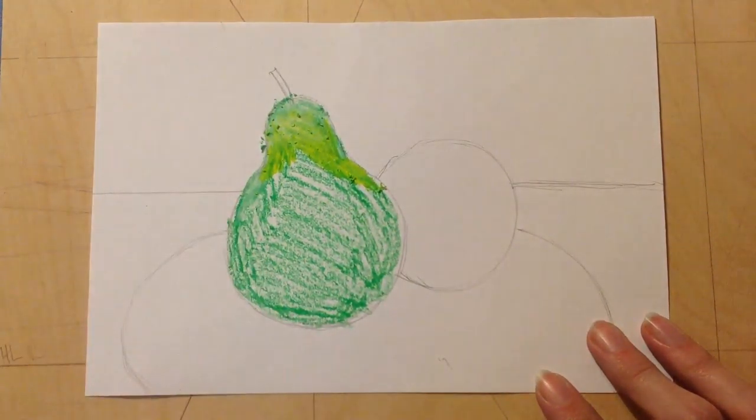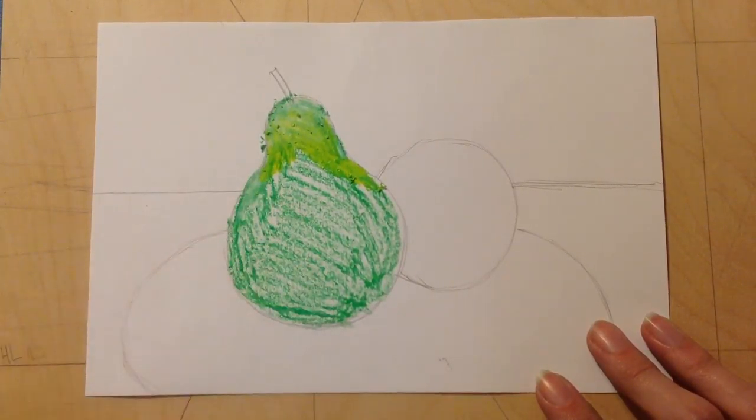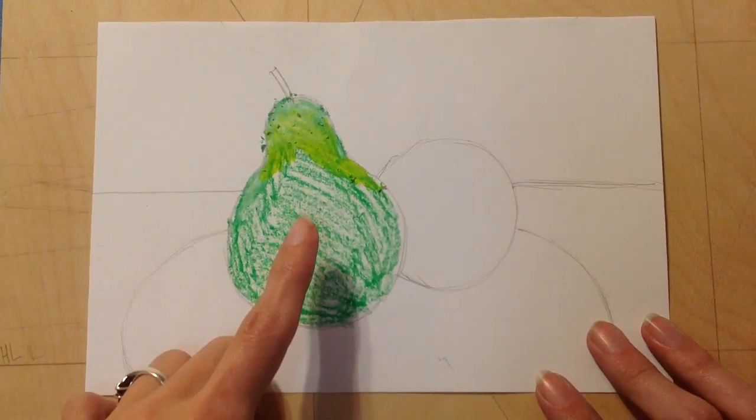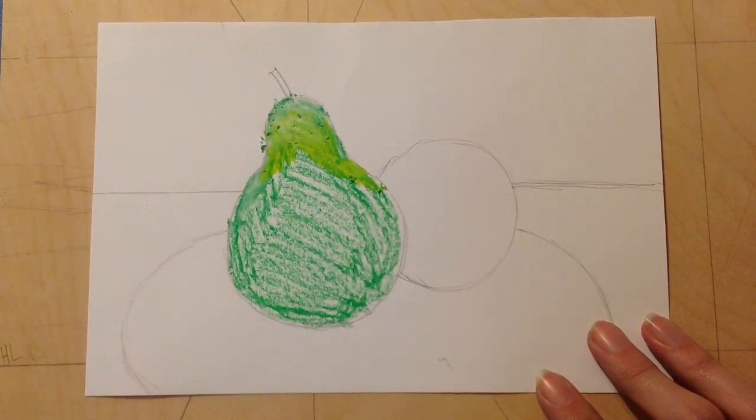One way to make something darker or make it look brown is to add the opposite color. The opposite color of green is red. So, I'm going to get my red color.